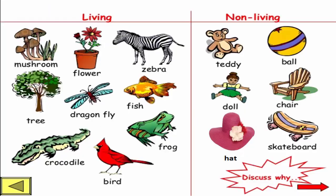To recognize, children: Mushroom — living thing, they can grow. Flour. Zebra — they can eat and grow. Tree — they can eat and grow.